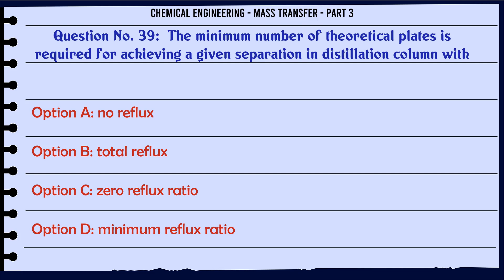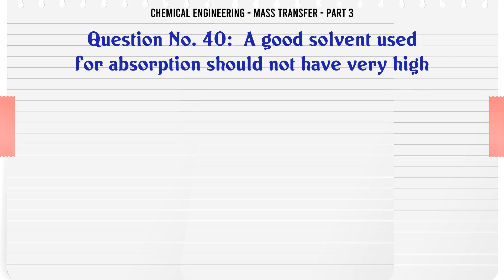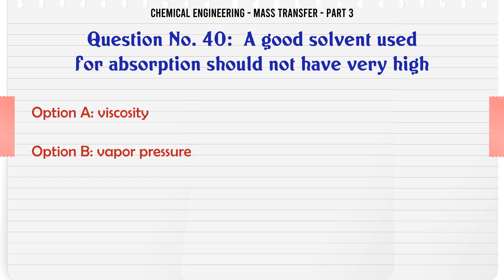The minimum number of theoretical plates required for achieving a given separation in a distillation column is with: A) no reflux, B) total reflux, C) zero reflux ratio, D) minimum reflux ratio. The correct answer is: total reflux.